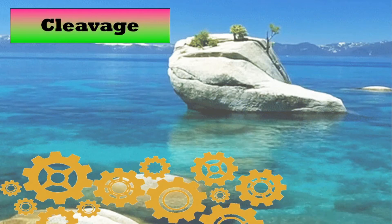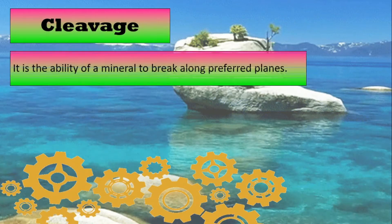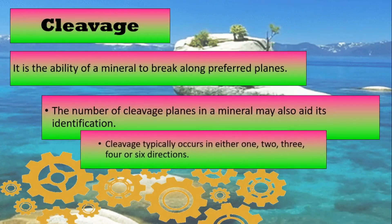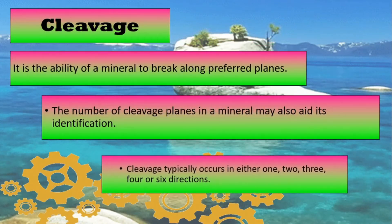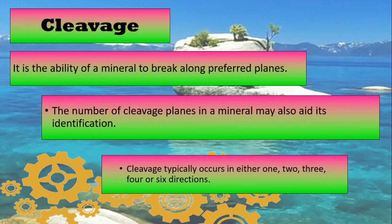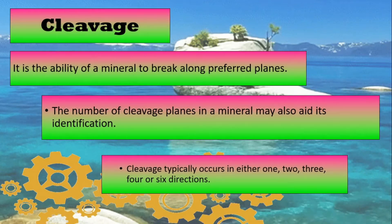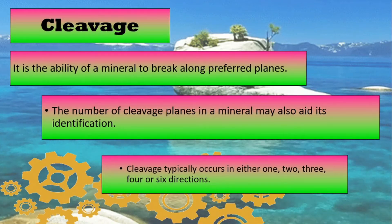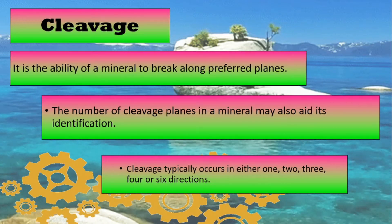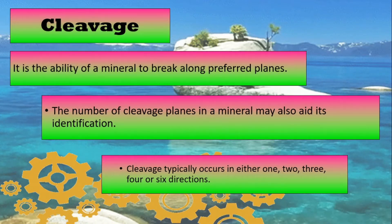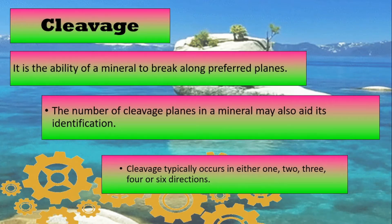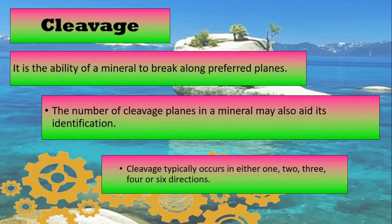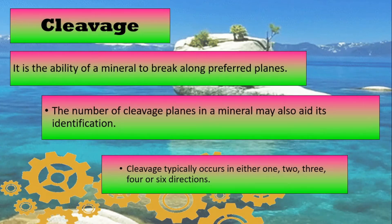Next is cleavage. Cleavage is the ability of the mineral to break along preferred planes. The number of cleavage planes in a mineral may also aid its identification. In a mineral, cleavage typically occurs in either one, two, three, four, or six directions.